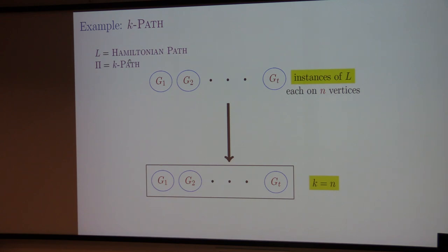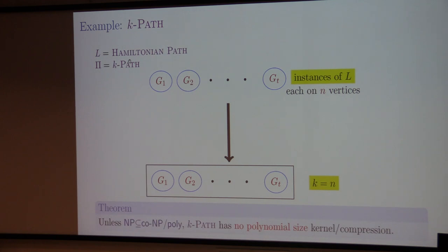You just take the disjoint union of all instances and set k to be n. This satisfies all the properties, and we get that k-path does not have a polynomial kernel. That is how we rule out standard kernels.